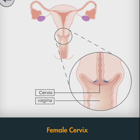The cervix performs two main functions. First, it facilitates the passage of sperm into the uterine cavity, achieved via dilation of the external and internal OS. Second, it maintains sterility of the upper female reproductive tract — the cervix and all structures superior to it are sterile, which ultimately protects the uterine cavity and upper genital tract.